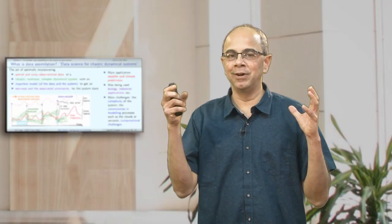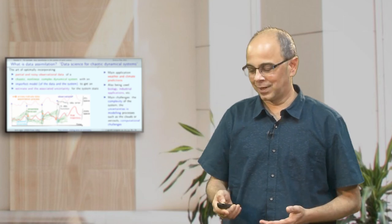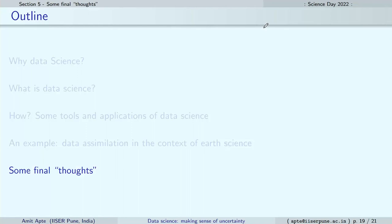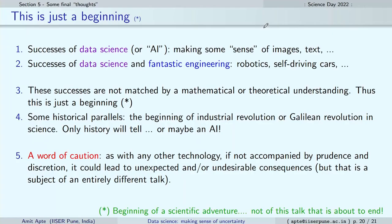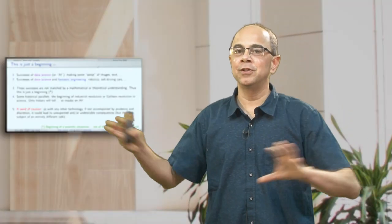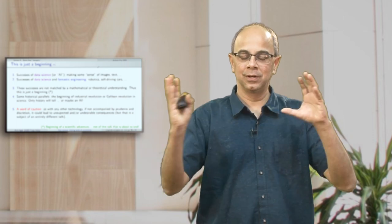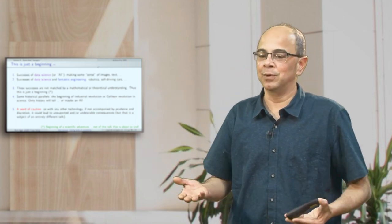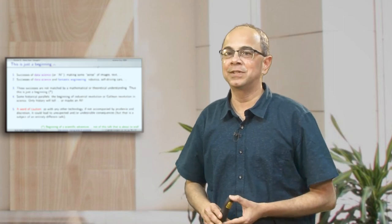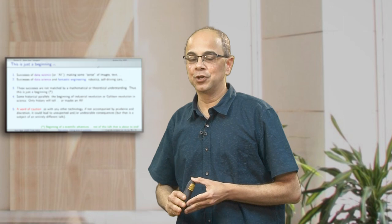That is where the topic I study — which can be called data science for chaotic complex dynamical systems — comes in. What we have are complex, noisy, partial, uncertain observations about the system. The system itself is chaotic and we want to make predictions in this imperfect setting where the model is not perfect and the data have a lot of uncertainties. Applications are in weather prediction, climate prediction, biological networks, medicine, and industrial applications.